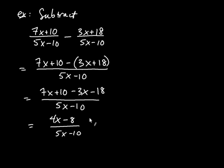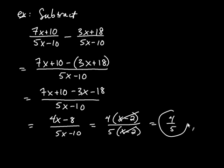Okay, and now remember, simplify if you can. And we can factor, because it's 4 times x minus 2 divided by 5 times x minus 2. And now the x minus 2's, of course, cancel, and we're left with just 4 fifths.